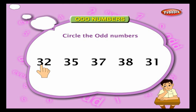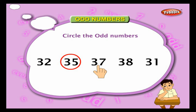32 ends with two, so it is not an odd number. 35 ends with five, so it is an odd number — circle it. 37 ends with seven, so this is an odd number — circle it.